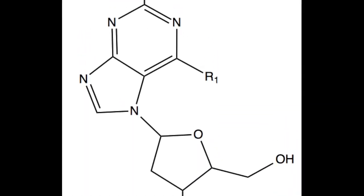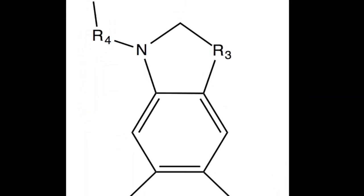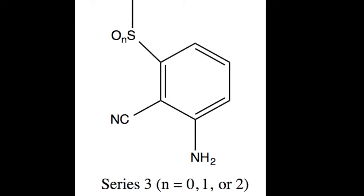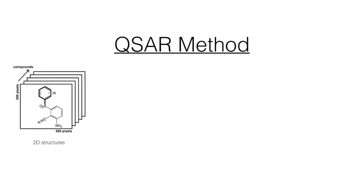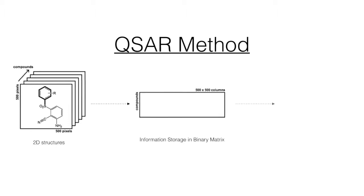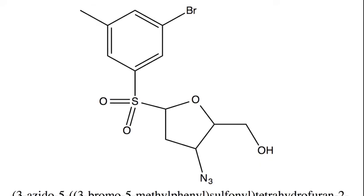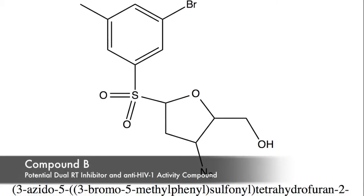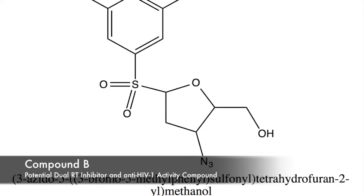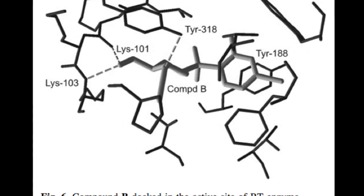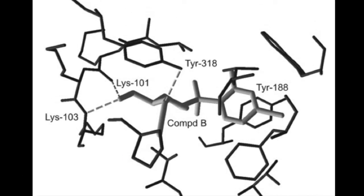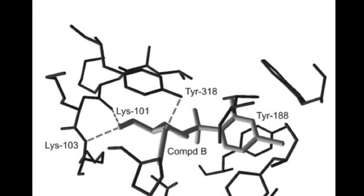They took three base series of molecules, substituting functional groups to explore 120 different potential compounds. They then made 2D models of each compound, converting each pixel into an element of a binary matrix, and used MATLAB to analyze these matrices for structural analysis. They were able to identify compound B as a highly promising dual-target drug, predicted to act as an RT inhibitor as well as an anti-HIV-1 activity compound.